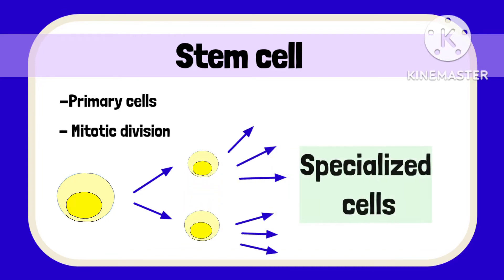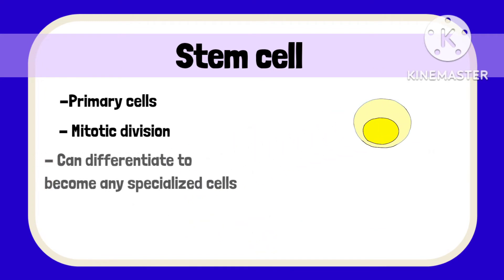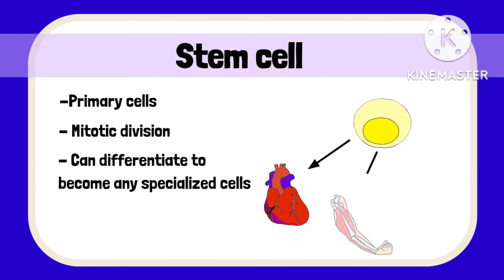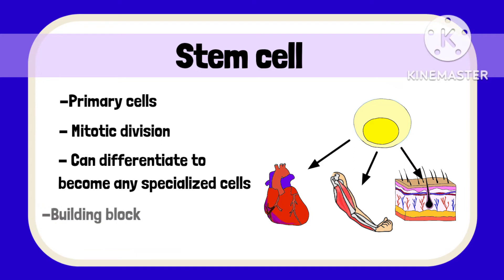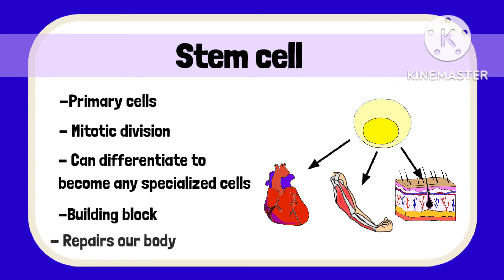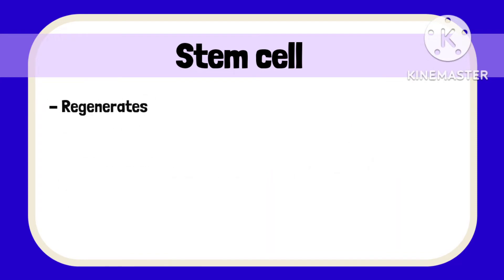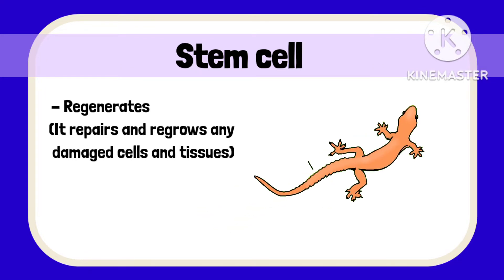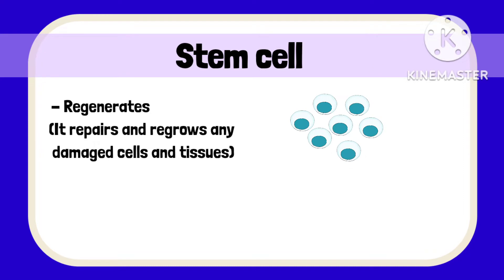Stem cells can become cardiac cells, skeletal muscles, or skin. They are the basic building blocks of life and serve to repair our body systems. Stem cells are believed to have regenerating properties like the lizard which loses its tail and regrows it — stem cells do the same thing for our body tissues.